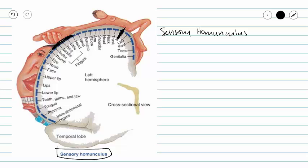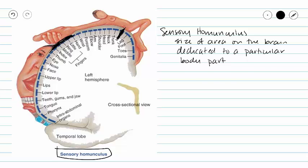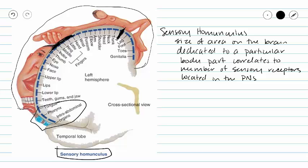Homunculus means 'little man,' and the size of the area on our brain dedicated to a particular body part correlates to the number of sensory receptors located in that area. This accounts for the great distortion of our homunculus lying across our brain. All of this is related to our somatic nervous system and our skin. We have very little area dedicated to our organs — we don't have a map of our organs on our brain, only a map of our skin.